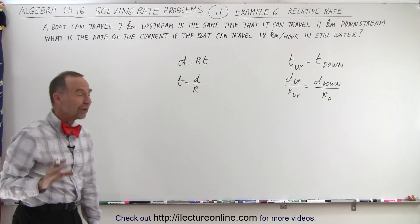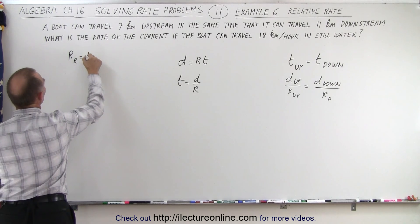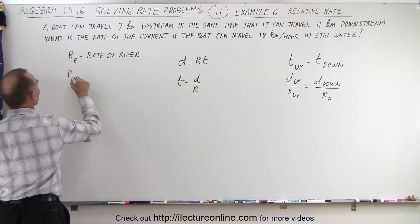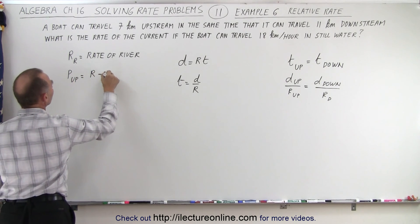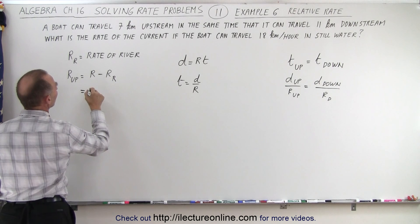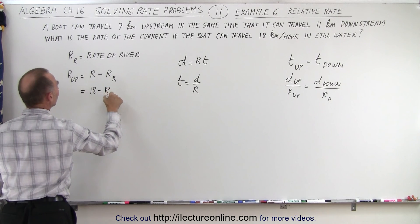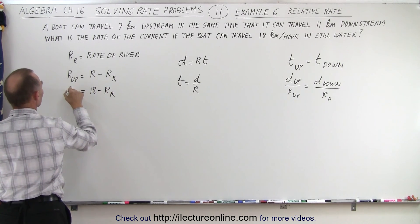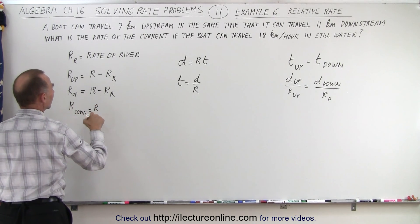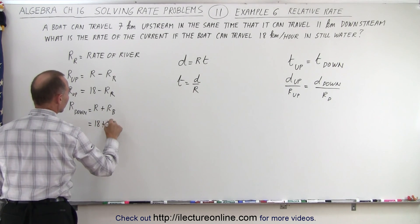How do we define the rate upstream and downstream? Let's say r is the rate of the river. The rate upstream is equal to the rate of the boat minus the rate of the river — in this case, 18 minus r. And the rate downstream is equal to the rate of the boat plus the rate of the river, which would be 18 plus r.